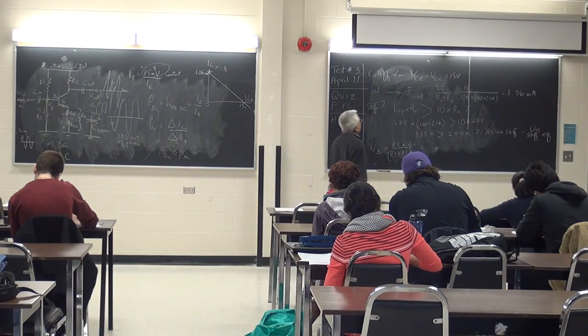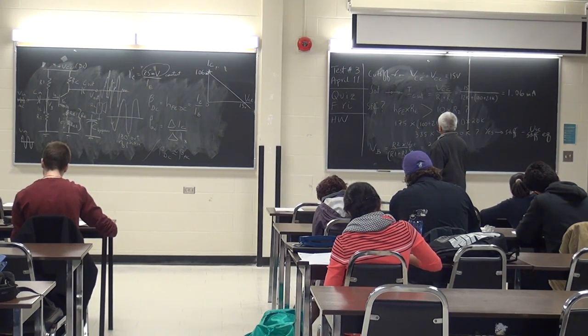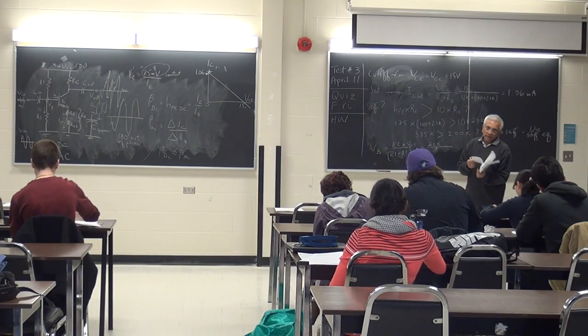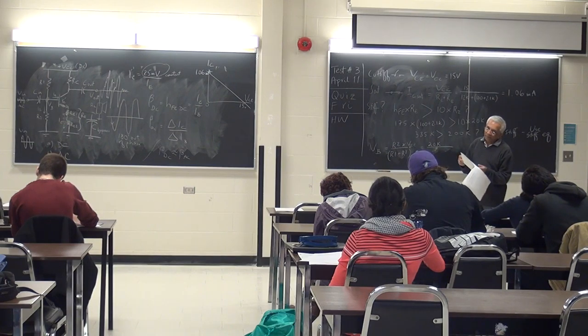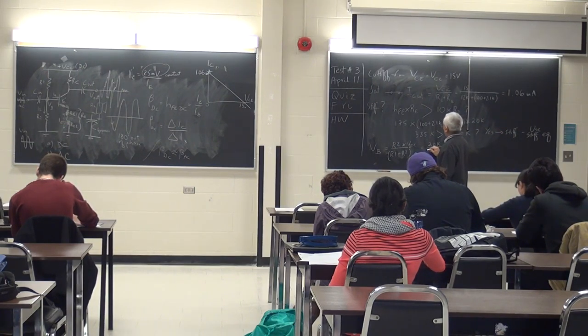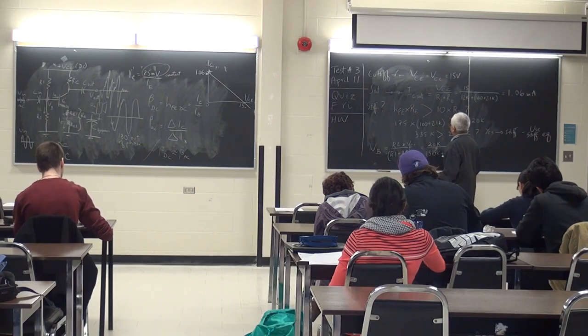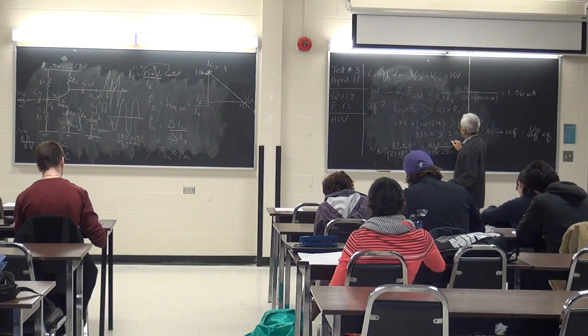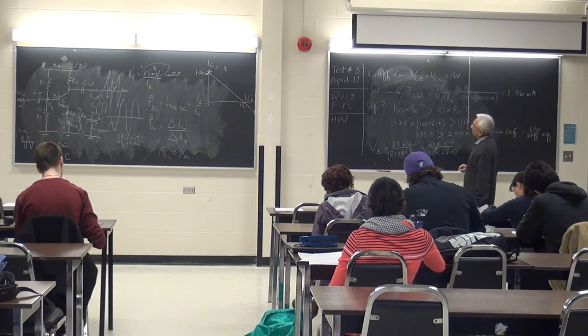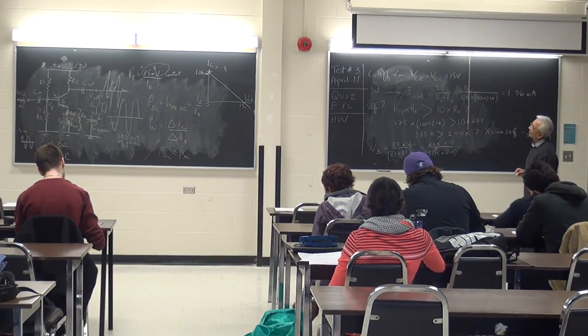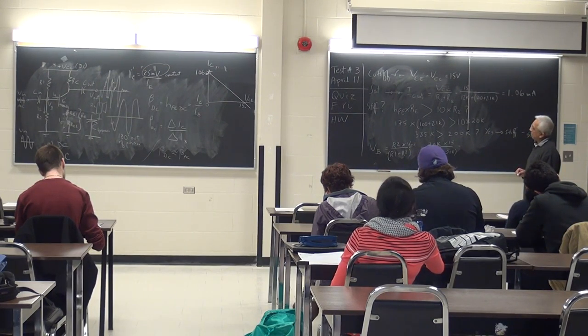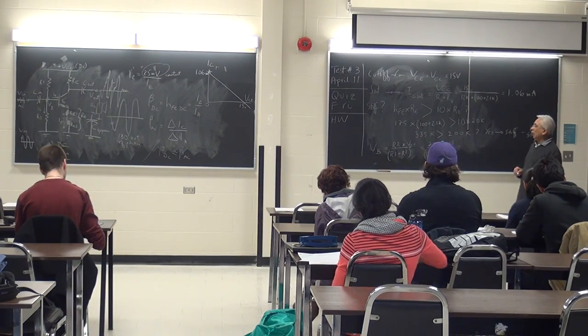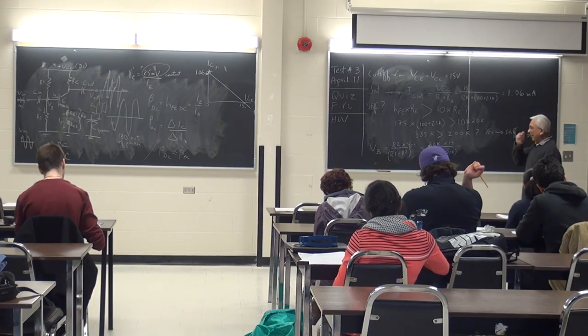So, R2 is 20K over R1. How much is R1? 150K. Plus 20K. Multiplied by 15V. What do you get?